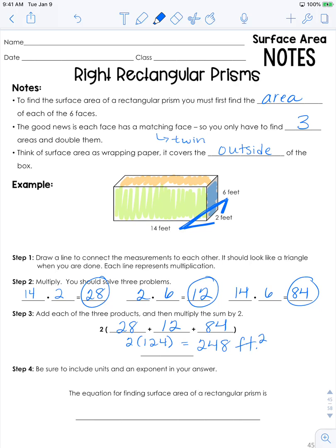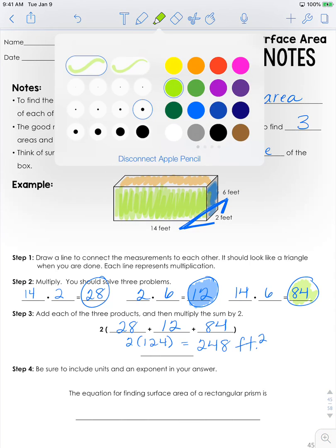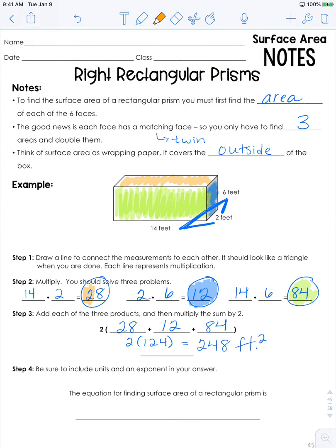I'm going to grab the highlighter and show you where the areas came from. So 12 is the area of both of these sides here. 14 times 6 is 84, the area of both the front and the back side of the prism. And then 14 times 2 is the area of both the top and the bottom of the prism. If you have a highlighter or colored pencils or crayons and want to use something like that to help you, it's often a good idea because you need to see what you're doing.